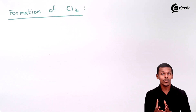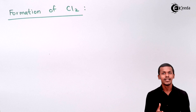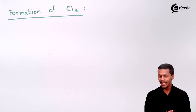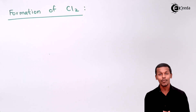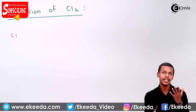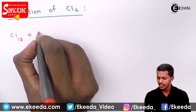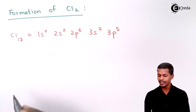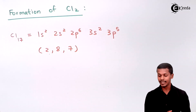So, formation of Cl2. In this case I am not going to discuss how the chlorine atom has been formed chemically, but we are coming back to how the bond has been formed and which kind of bond has been formed between the chlorine atoms. We know that the electronic configuration of chlorine — since its atomic number is 17 — can be written as 1s2 2s2 2p6 3s2 3p5, or in shorthand as 2, 8, 7. This is the electronic configuration of chlorine.